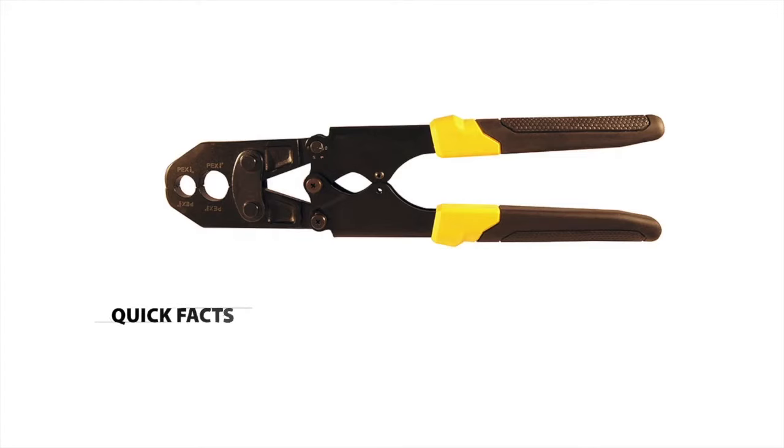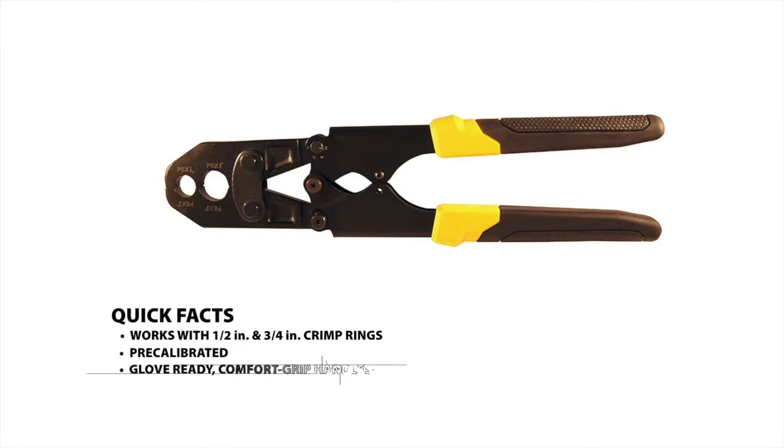The Apollo PEX combo crimp tool features glove-ready cushioned comfort grip handles, the ability to create half and three-quarter inch connections without the need for jaw changes, and is backed by a five-year warranty.